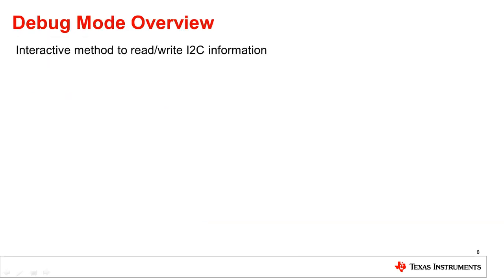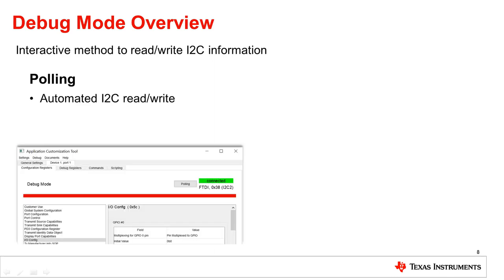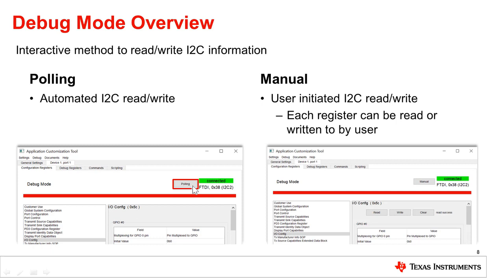The GUI uses debug mode to read and write I2C information in real time. There are two different ways to use debug mode. Polling mode reads and writes I2C information continuously without further user prompting, and the GUI defaults to polling mode when you enter debug mode. Manual mode can be entered by pressing the polling button, which will then display 'manual' to indicate the GUI is in manual mode.